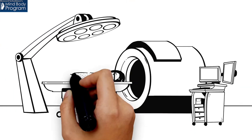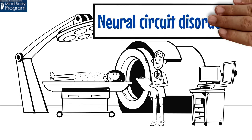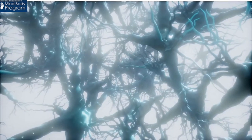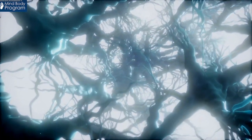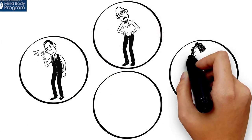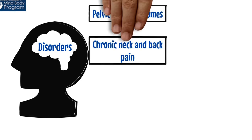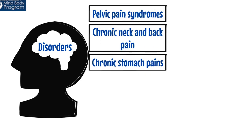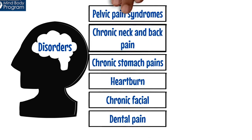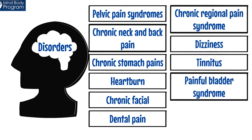Once a doctor has helped you to be sure that there is no serious structural problem, there are many clues you can use to confirm that you have a neural circuit disorder. There are certain disorders that are almost always neural circuit disorders, such as tension and migraine headaches, irritable bowel syndrome, fibromyalgia, and insomnia. There are many other disorders that are usually, but not always, caused by neural circuits, such as pelvic pain syndromes, chronic neck and back pain, chronic stomach pains and heartburn, chronic facial or dental pain, chronic regional pain syndrome, dizziness, tinnitus, and painful bladder syndrome.